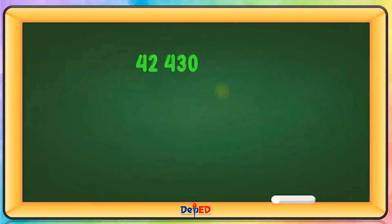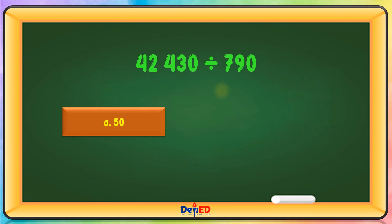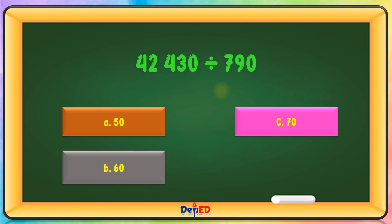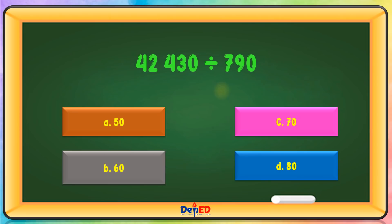42,430 divided by 790. A. 50, B. 60, C. 70, or D. 80. The correct answer is A.